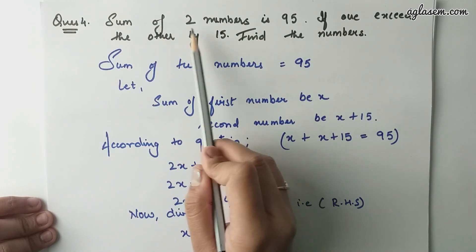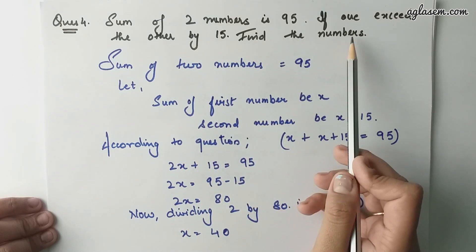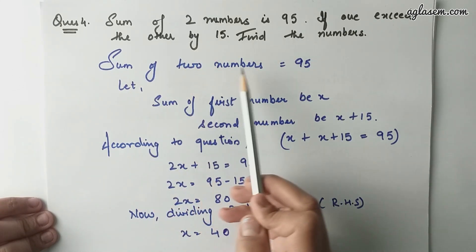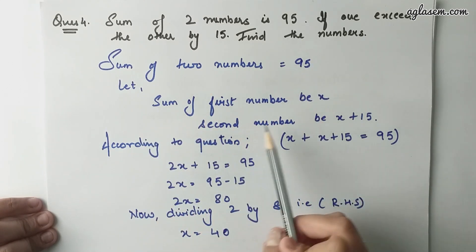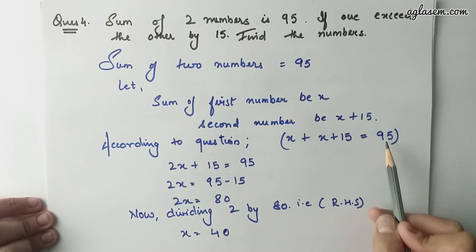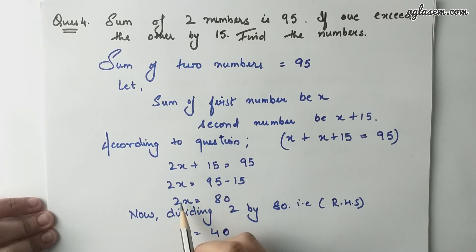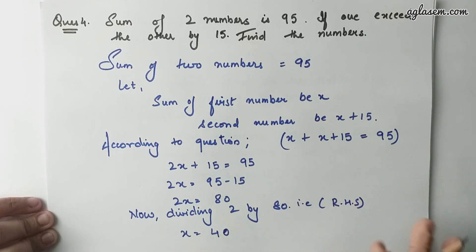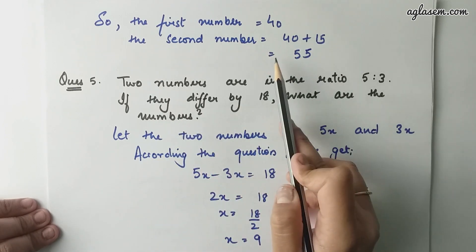Question number 4: Sum of two numbers is 95. If one exceeds the other by 15, find the numbers. According to the question, let the first number be x and the second number be x plus 15. So, x plus x plus 15 equals to 95, giving 2x plus 15 equals to 95, then 2x equals to 80, so x equals to 40. Therefore, the first number is 40 and the second number is 40 plus 15, which equals 55.